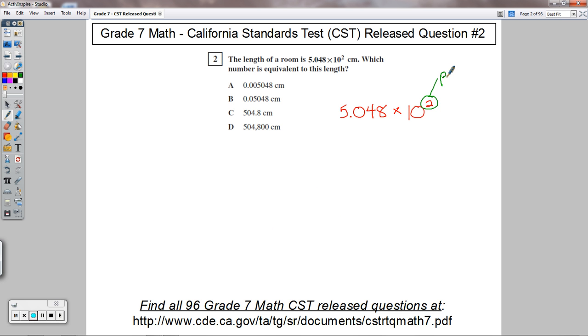So this is a positive power. That means this number is going to get bigger, it's going to get larger. That's how I remember how to move the decimal place. With positive powers, the number gets bigger.